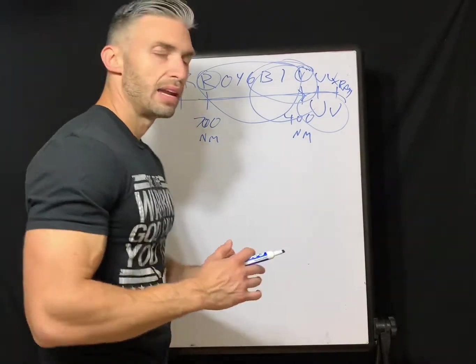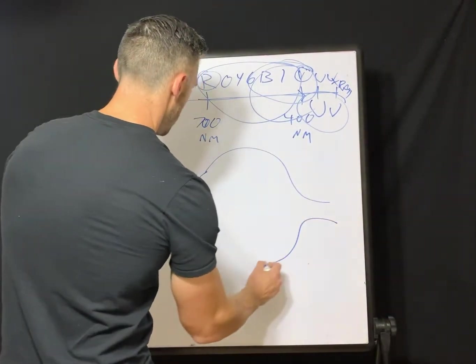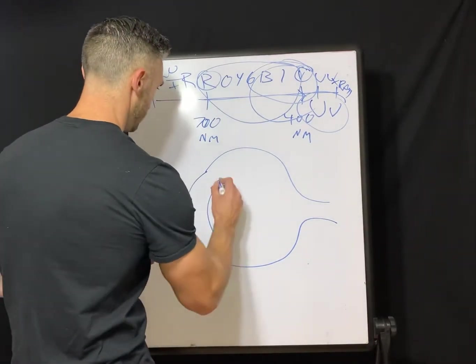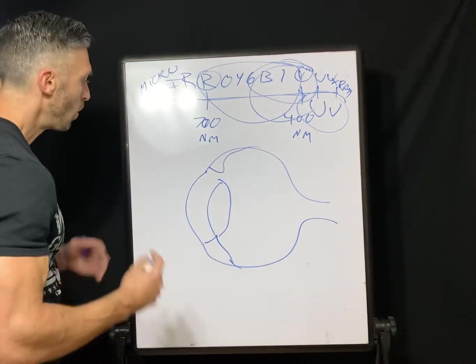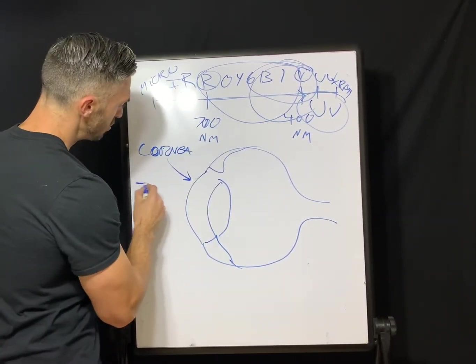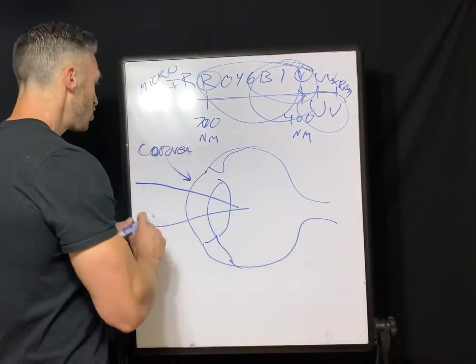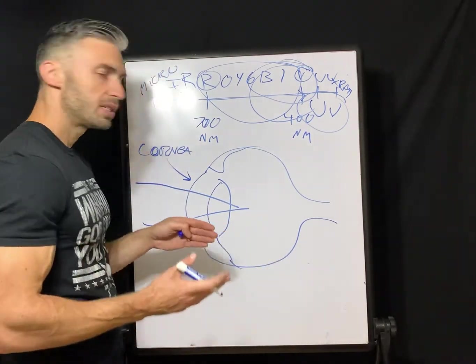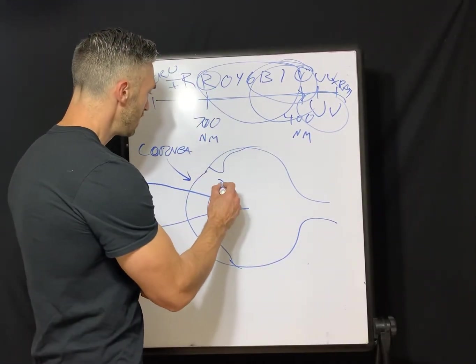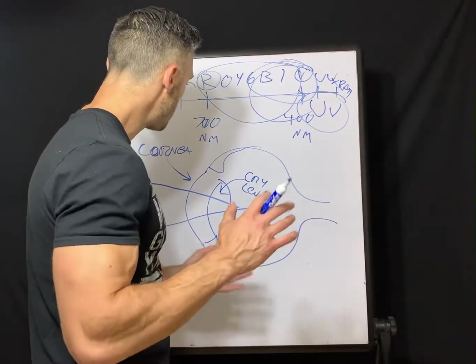The cornea is super important in our ability to see. Its primary purpose is as a plus-powered lens — about half a millimeter thin in the center — and it supplies about +43 diopters. When light enters the eye through the cornea, it first refracts at the corneal surface. We need a smooth tear film for good refraction, but it bends light at the surface and converges it inward, because that's what a plus-power lens does.